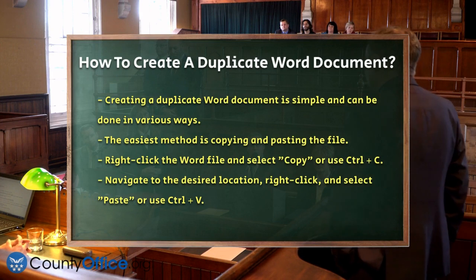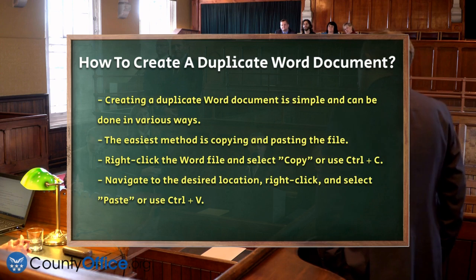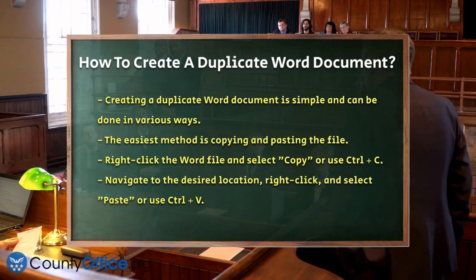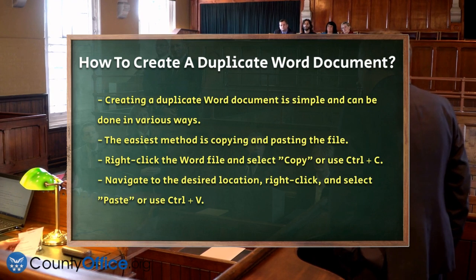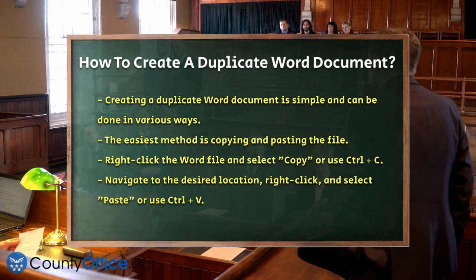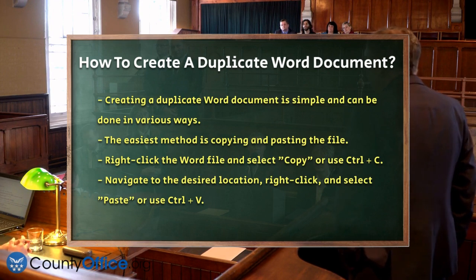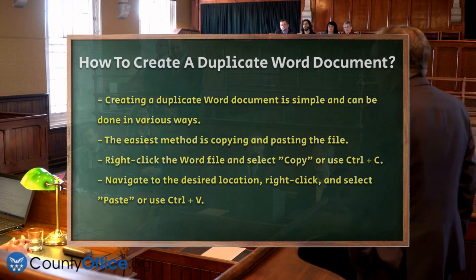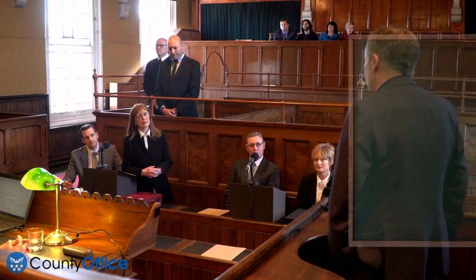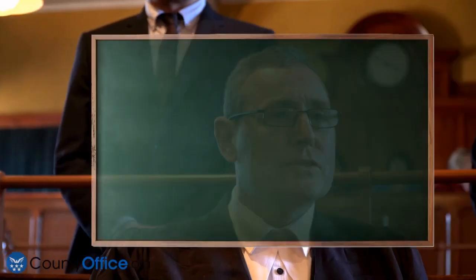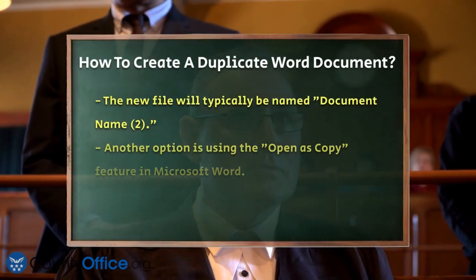Let's begin with the simplest method: copying and pasting. You can right-click on the Word file you want to duplicate, select Copy from the context menu, or use the keyboard shortcut Ctrl+C. Then navigate to the location where you want to save the copy, right-click, and select Paste or use Ctrl+V. This will create a new file with the same content as the original, usually named something like the original document name.